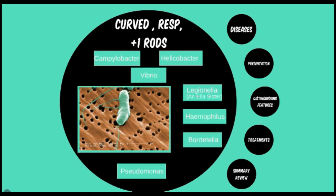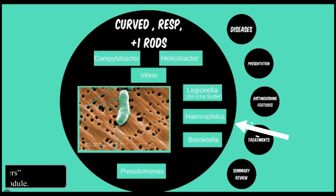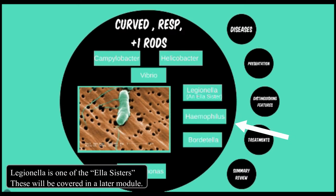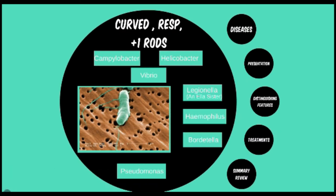The first three in the video tier will be the enteric curved rods: Helicobacter, Campylobacter, and Vibrio. Following these will be the three respiratory rods: Legionella, Haemophilus, and Bordetella. Lastly, Pseudomonas has also been grouped here as well out of necessity. It can be placed in many different categories but doesn't really fit neatly into any one in particular, so for convenience it's been placed here.